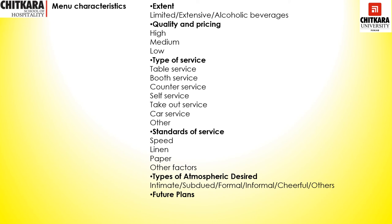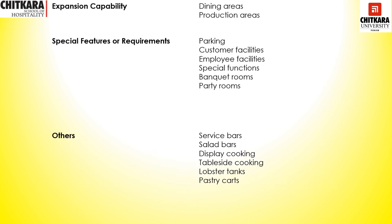Atmosphere considerations include whether the restaurant should feel intimate, subdued, formal, informal, or cheerful. Future expansion plans must also be addressed — how much you want to grow and keeping space available for that purpose. Expansion capability may cover the dining area — for instance, growing from 100 covers to 250 — and the kitchen or production area, which must be scaled up proportionally to match increased business volume.